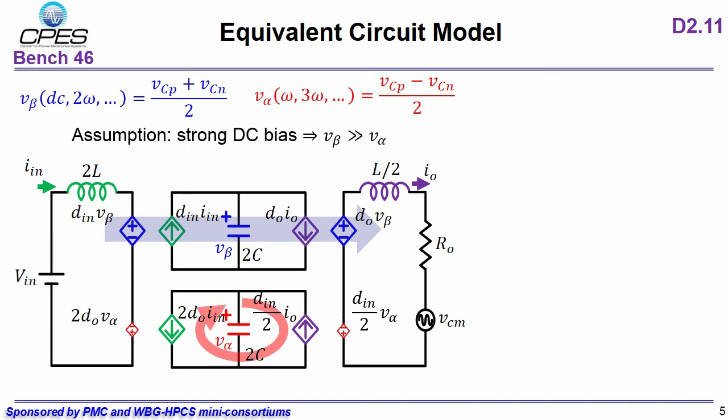We can also find there is circulating power exists in MMC, which clearly shows there. So V-alpha represents the circulating energy between two capacitors.